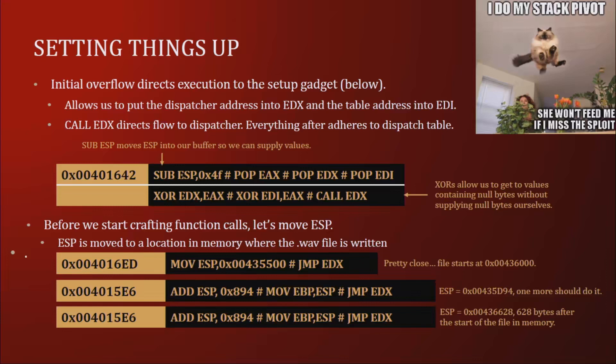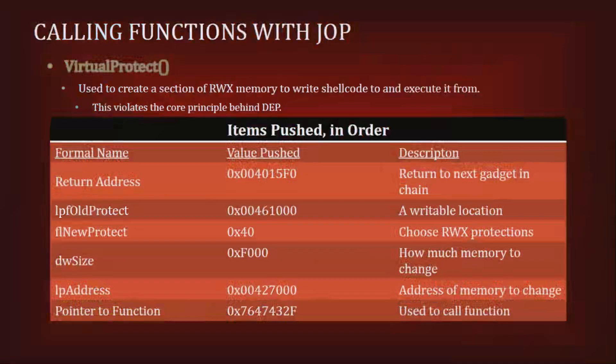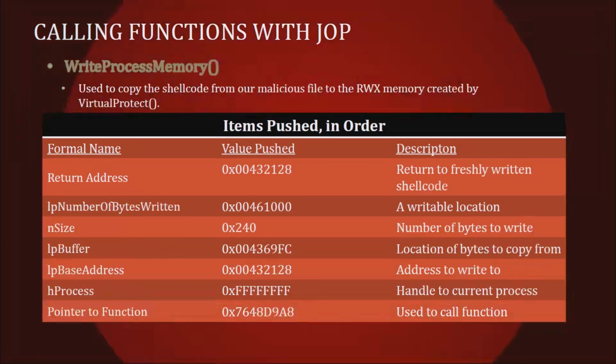The goal is to do purely JOP with the dispatcher gadget paradigm. Since we're making two Windows API calls, and an API call is a function that ends in a RET — which takes us out of JOP — we insert one RET to get right back into JOP. We use CALL with compensation by adjusting the stack. Then we handle WriteProcessMemory.